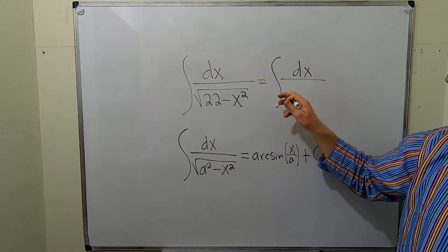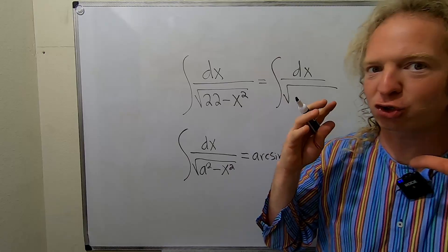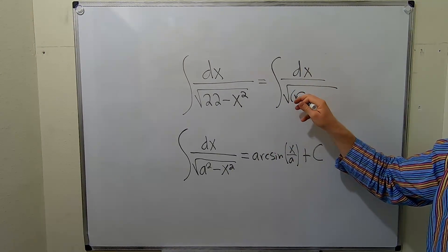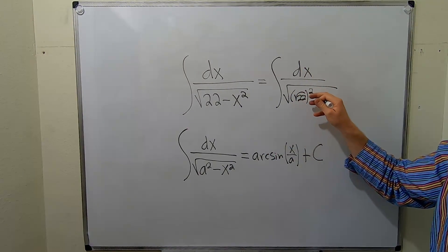So watch this. We can write 22 as the square root of 22 squared like this. It's really super awesome. Oh I love these problems.